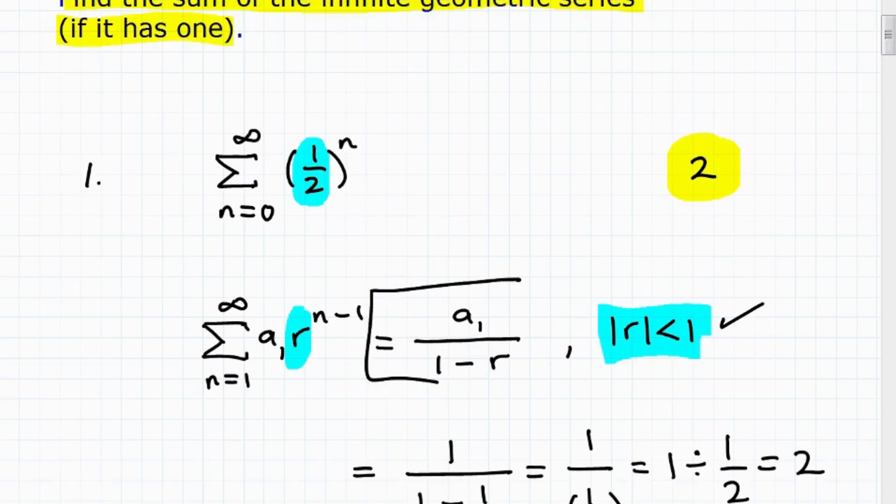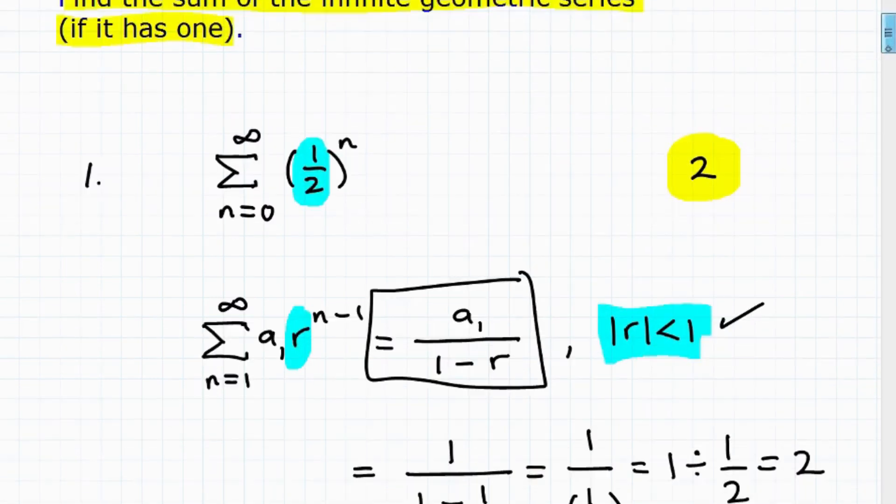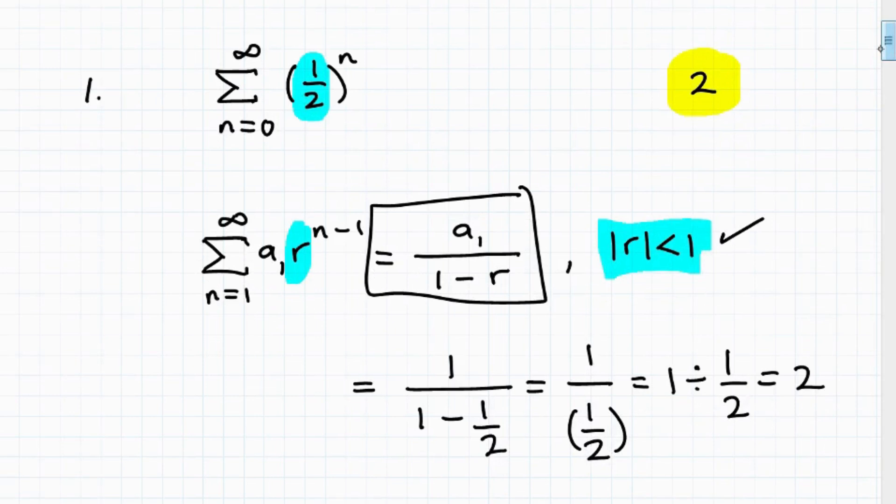So therefore, I can apply this formula, which is pretty straightforward stuff because all we need is the first term, okay, and the common ratio. And when you're given an infinite geometric series just like this, just look in terms of the format of how it's written. A1, the coefficient right here in front of the power.